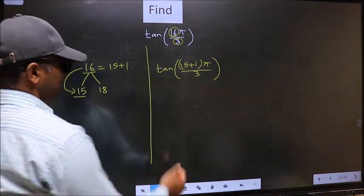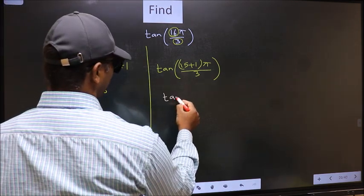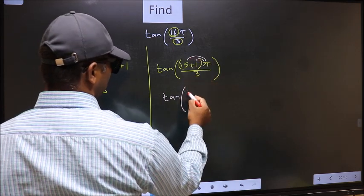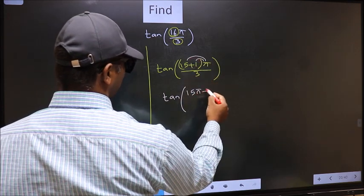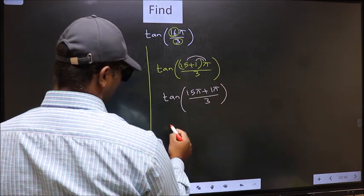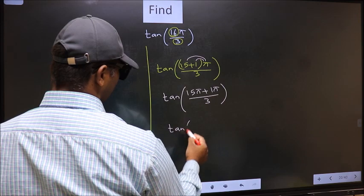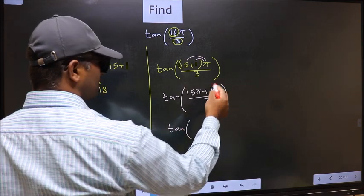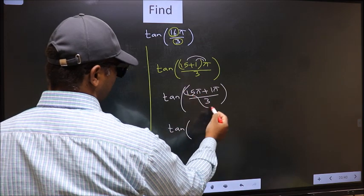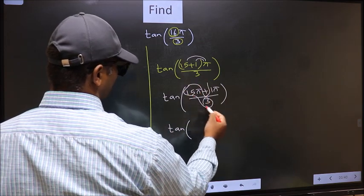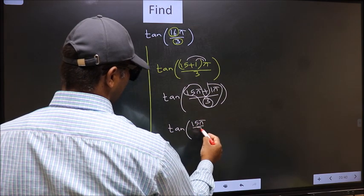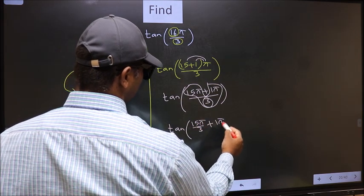Next, tan. Now you should open the brackets. We get 15 pi plus 1 pi by 3. Now, tan. Over here, we should split the denominator in this way. That is 15 pi by 3 plus 1 pi by 3.